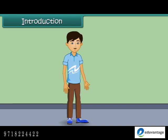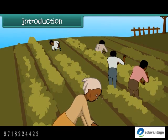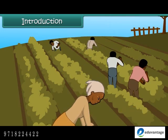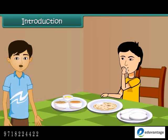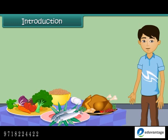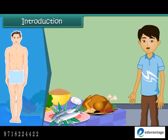Dear friends, you must have seen farmers working in paddy fields. They work all day long. But have you ever wondered where they get the energy to do their work with full enthusiasm? Actually, like us, they also get this energy from the food that they eat. In other words, food is the main source of energy for our body to perform daily activities. We get our food from both plants and animals. Food has to be produced on a large scale to meet everyone's requirements. In this module, we will discuss crop production and its management for the distribution of food.